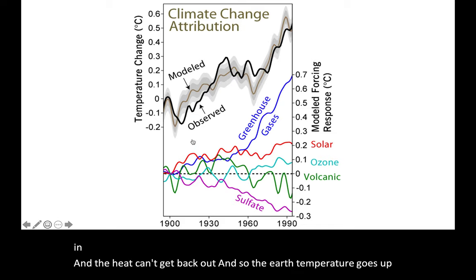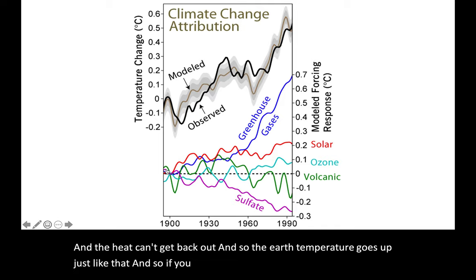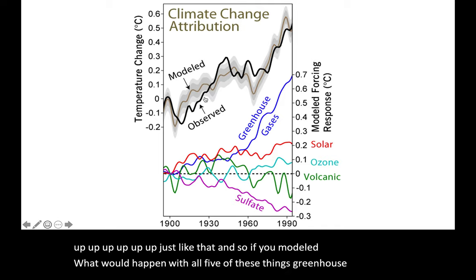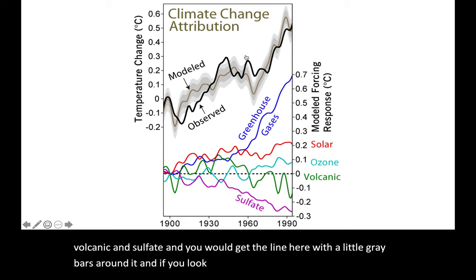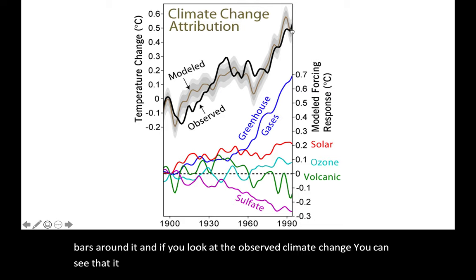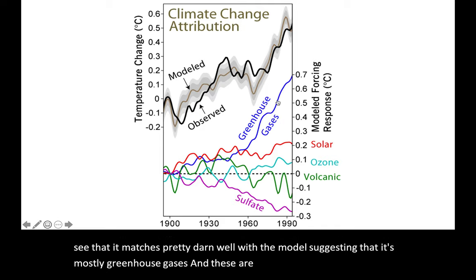If you model what would happen with all five of these things — greenhouse, solar, ozone, volcanic, and sulfate — you get the line here with the little gray bars around it. And if you look at the observed climate change, you can see that it matches pretty well with the model, suggesting that it's mostly greenhouse gases, and these are almost entirely just released by people. This is humans causing this particular change, bringing us out of this particular ice age.